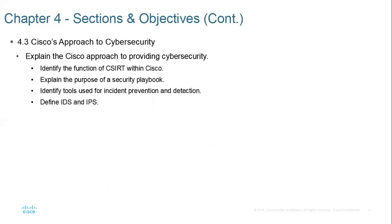We'll look at the Cisco approach to providing security intelligence, which is very critical. We've looked at digital forensics and created some of the foundation. Intelligence gathering is very key — without intelligence gathering, you cannot tell how to mitigate attacks. Then we'll look at the functions of a CSIRT — the Incident Response Team within Cisco — and security playbooks. A playbook is like a game plan: a document outlining the step-by-step actions to employ whenever you encounter a type of attack.